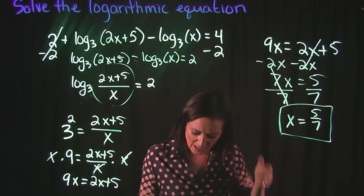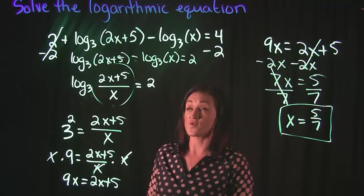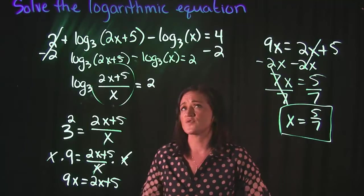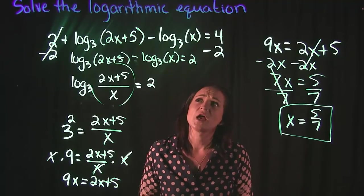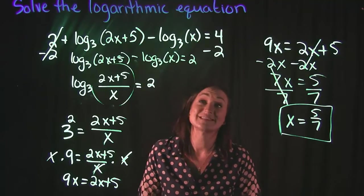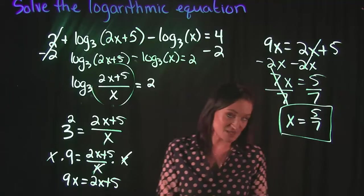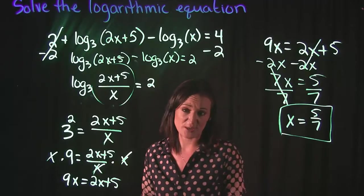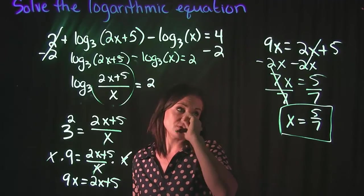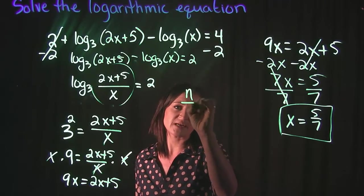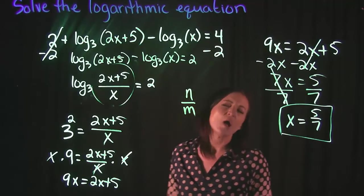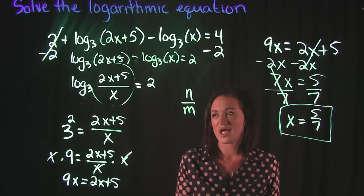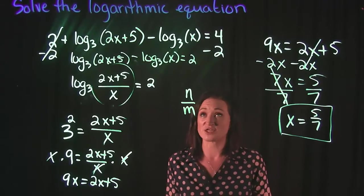I forgot to actually tack on the additional instructions for this particular question that I'm using here. The instructions for this particular problem says, for our solution, they said that if you take the reciprocal of the solution, represented by n over m, what would the m value be? So this is just a little extra tidbit that they tacked on to this problem.